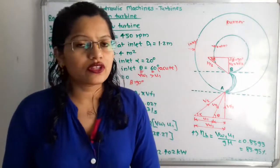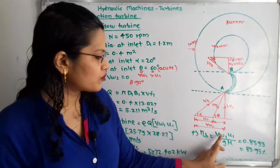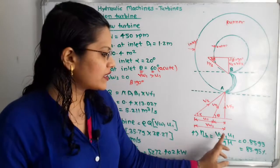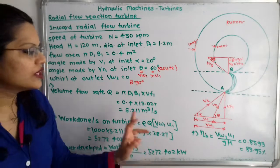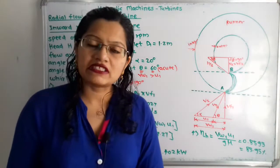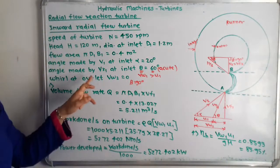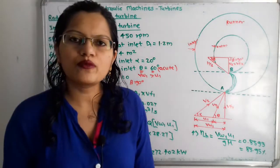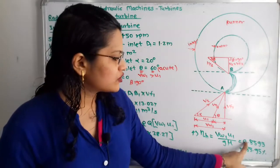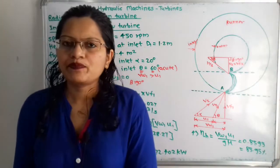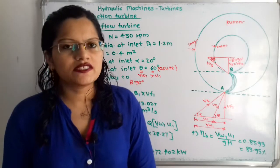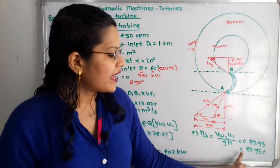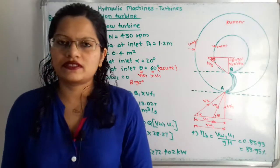Finally, hydraulic efficiency = (Vw1 × u1) / (g × H). Substituting Vw1 = 35.79, u1 = 28.27, g = 9.81, H = 120 m, the answer is 0.8595. Multiplying by 100, hydraulic efficiency = 85.95%.